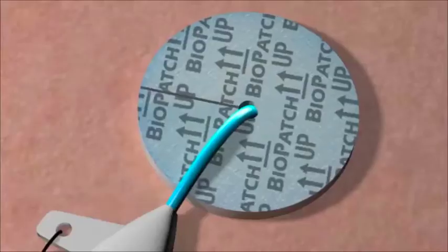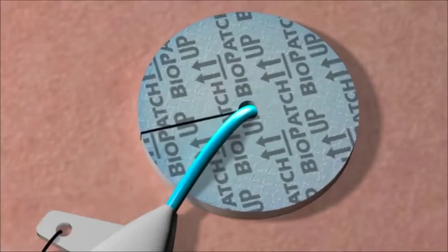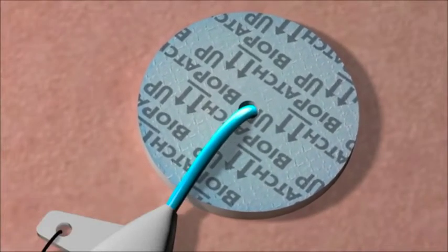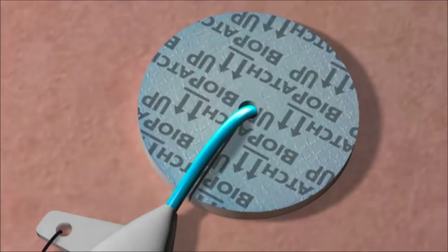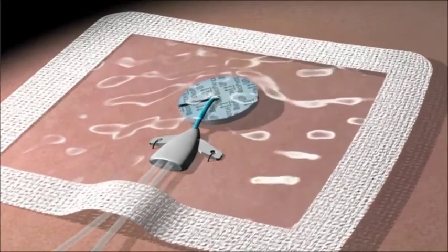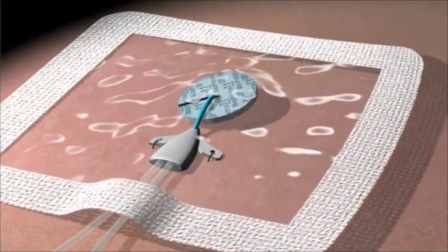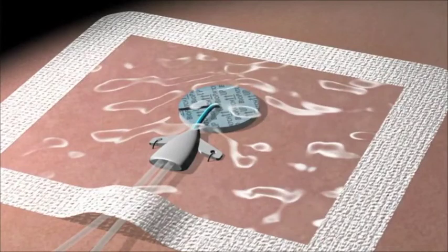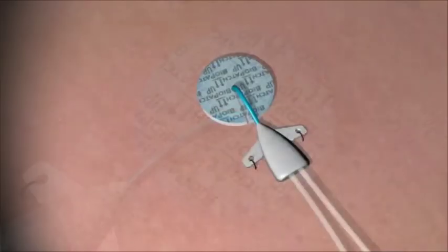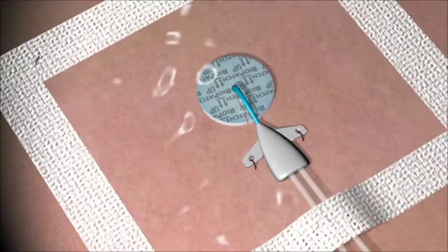In order to ensure easy removal when used with a film dressing, place BioPatch around the catheter in such a way that the catheter rests upon the slit portion of the BioPatch. If the slit is not properly aligned, the catheter can become trapped between BioPatch and the transparent film dressing. To maximize efficacy, make sure the edges of the slit are touching and the BioPatch is in contact with the skin to achieve 360 degrees of coverage around the catheter.